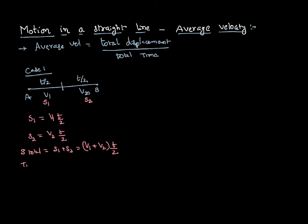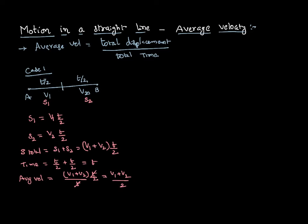The total time is the first half plus the second half, which equals T. Now we can find average velocity as total displacement divided by total time. Total displacement is (V1 + V2) times T/2, divided by total time T. The T cancels, and we get average velocity equals (V1 + V2) / 2. This is how we calculate the average velocity for Case 1.